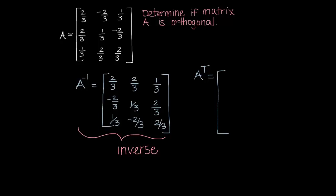So basically what happens is this column one right here is going to turn into my row one of the transpose. So two-thirds, two-thirds, one-third. And then column two, which is negative two-thirds, one-third, two-thirds, becomes my row two. And column three becomes row three.